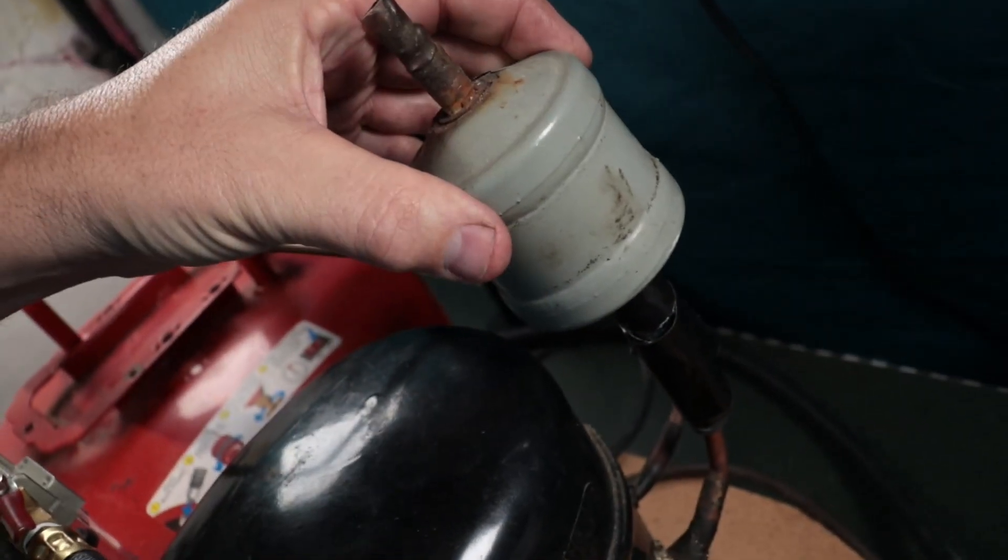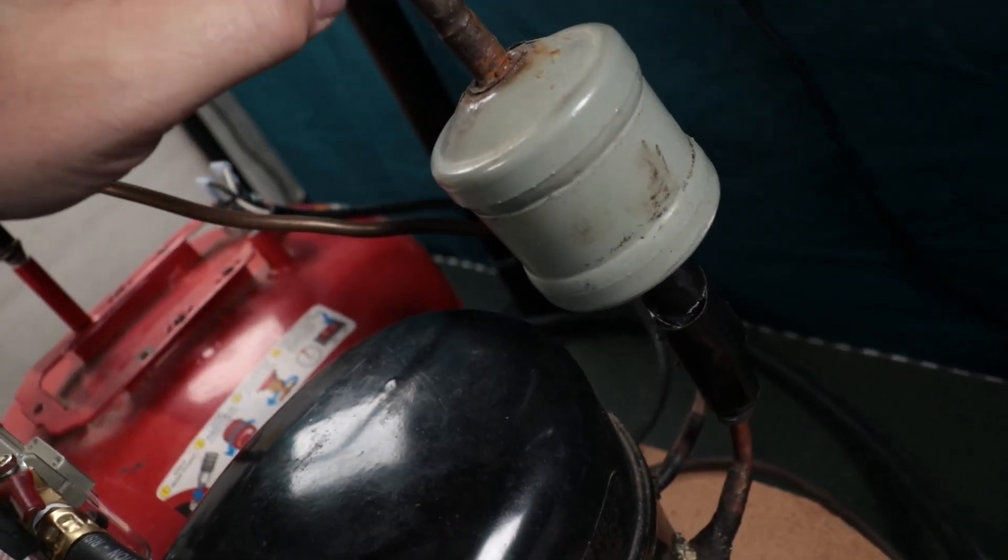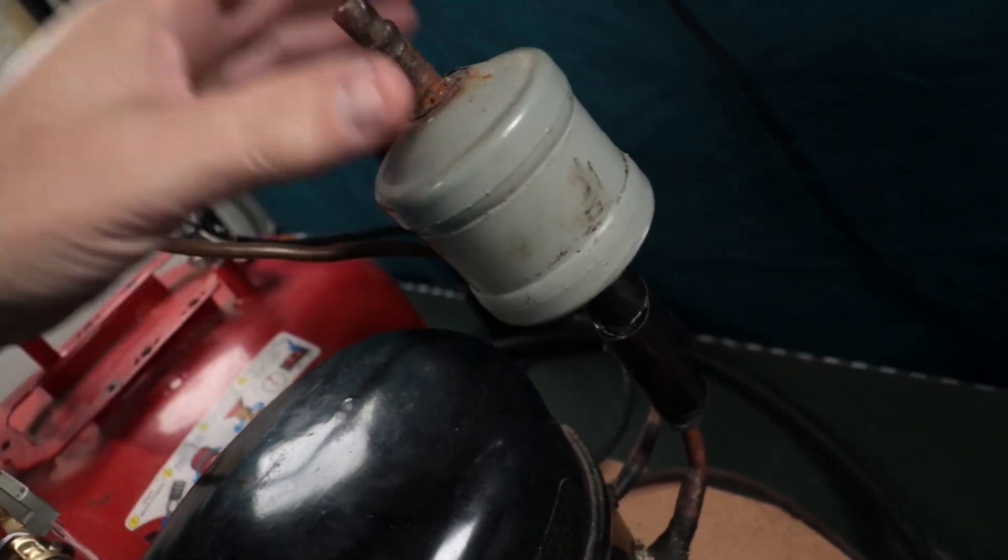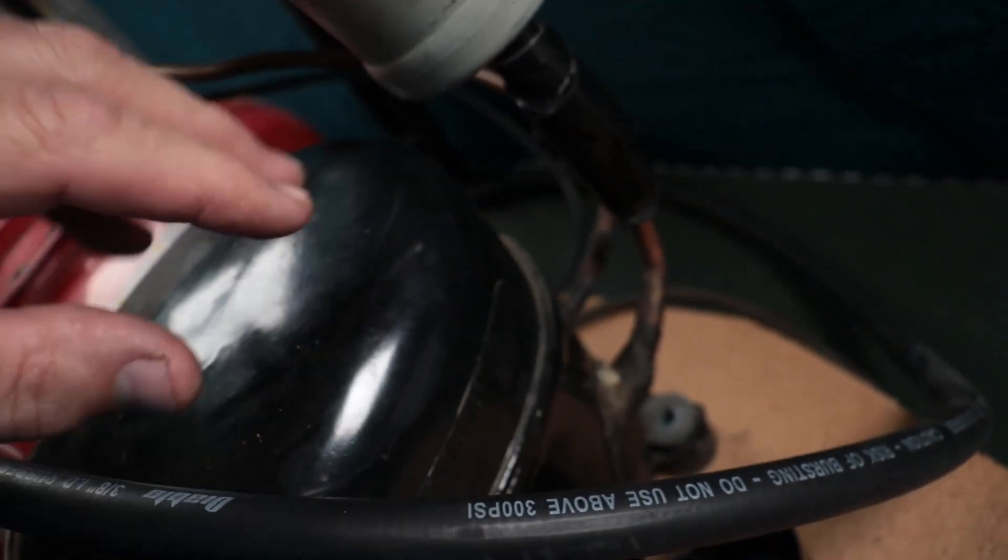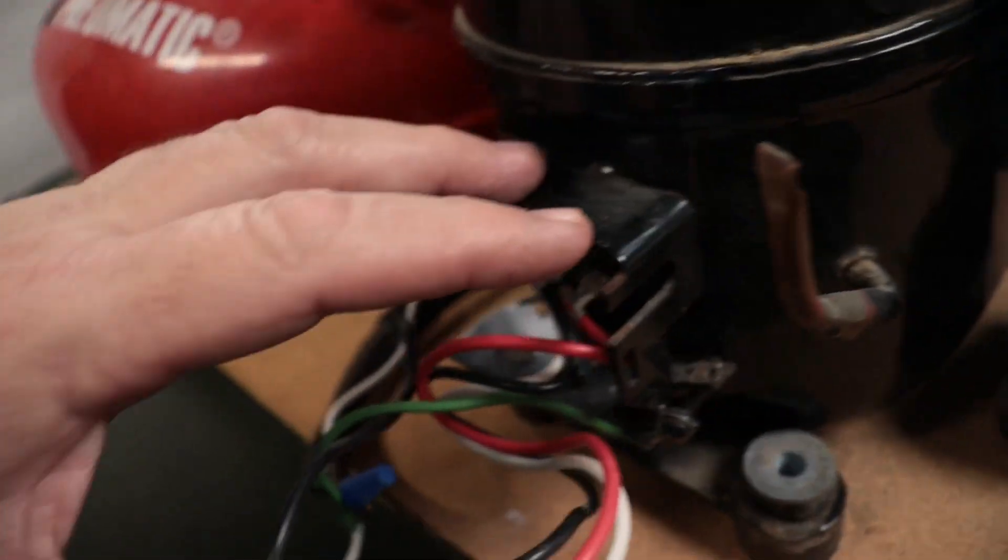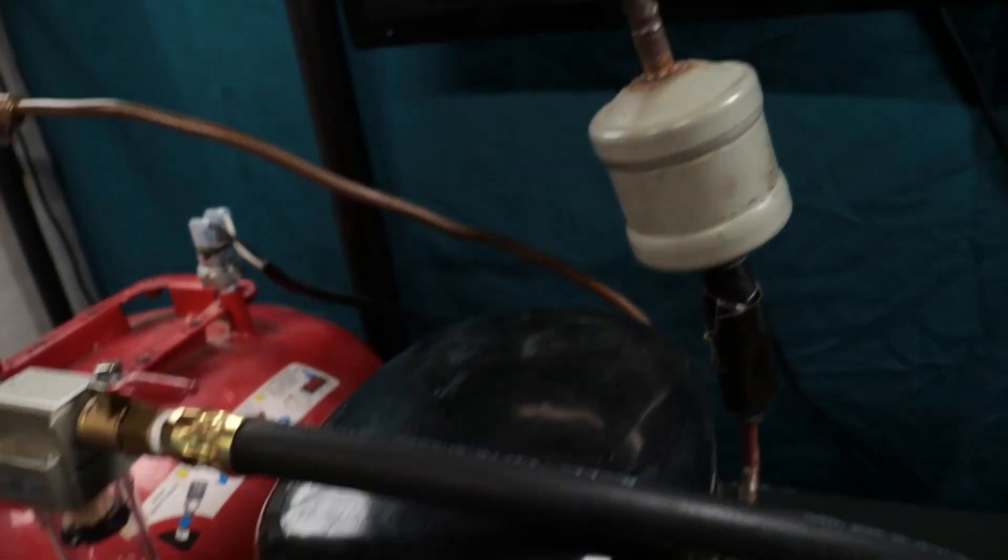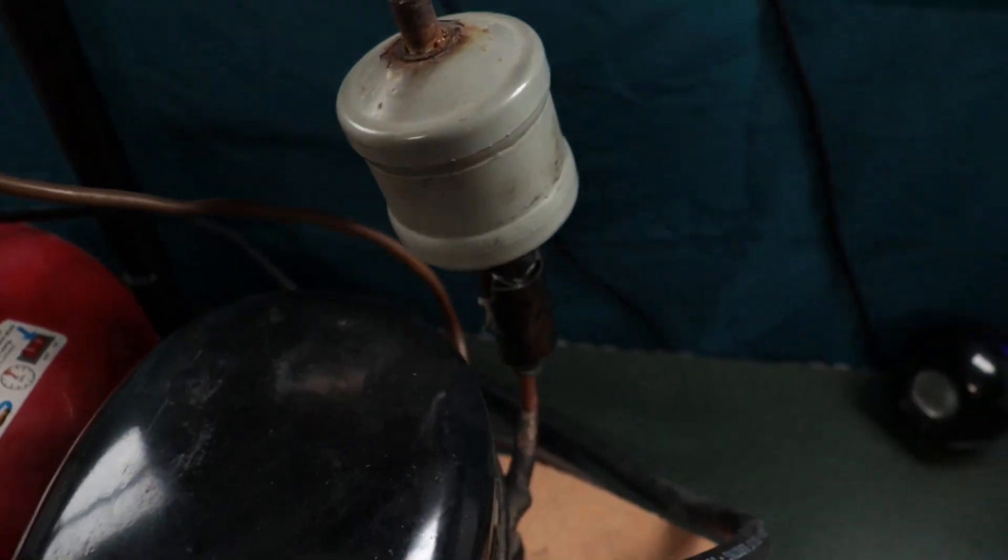So what I've done here is I've attached this filter dryer. Keeps the water out and keeps the dirty particles out of this compressor. It's nice and clean in there. This is your suction and in the event that you get one of these powered up and you don't know which side is which, you can put your finger over it. You can actually feel it. I'll turn it on here in a moment and hear it run.